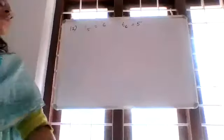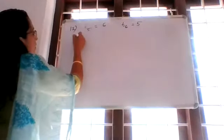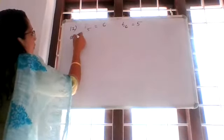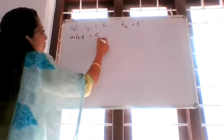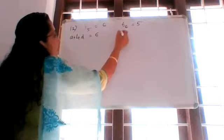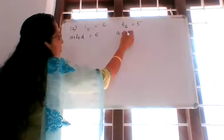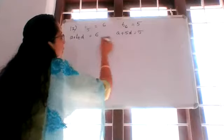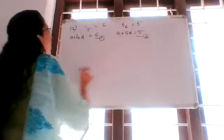We have TN is equal to A plus N minus 1 into D. So T5 we can replace it as A plus 4D is equal to 6, and T6 we can replace it as A plus 5D is equal to 5. Let it be equation number 1 and equation number 2.